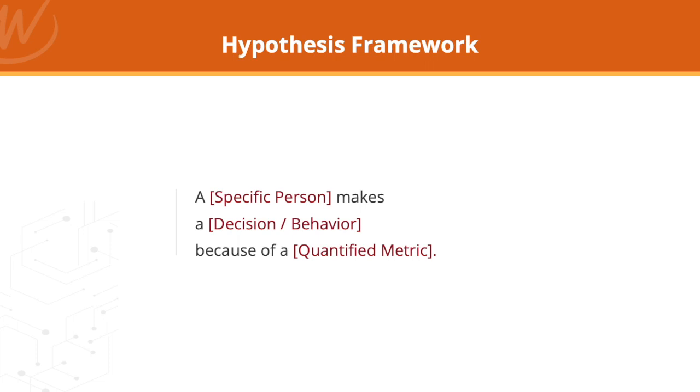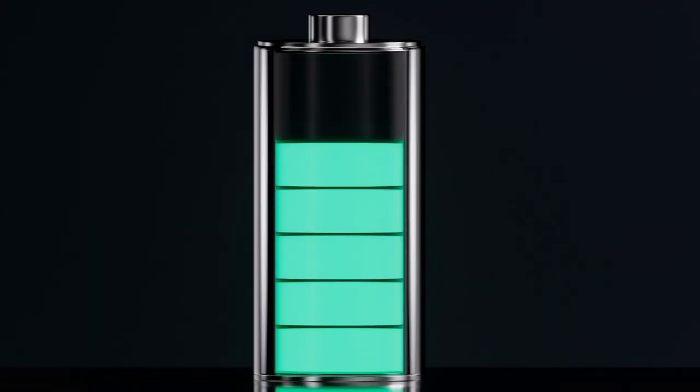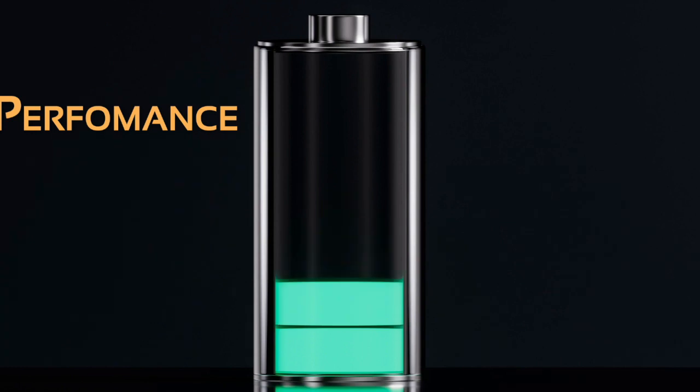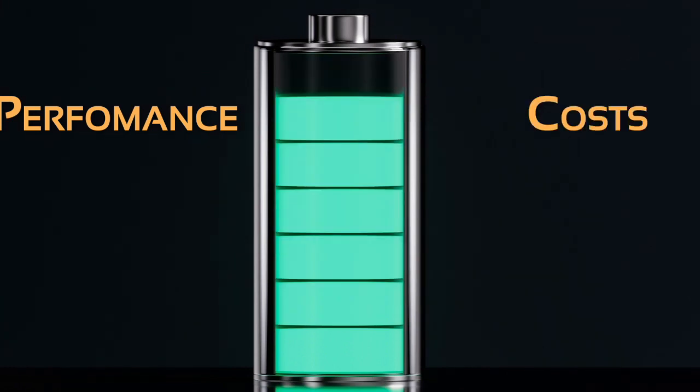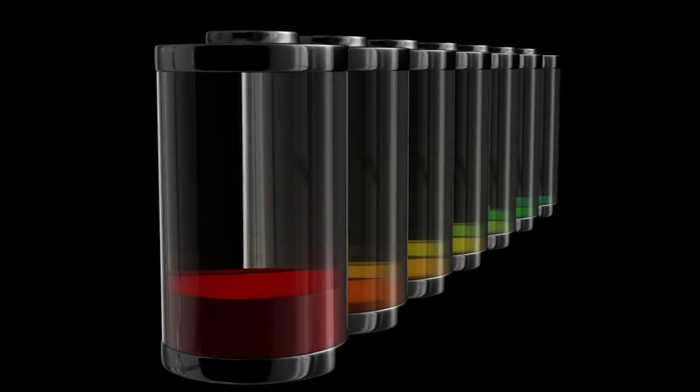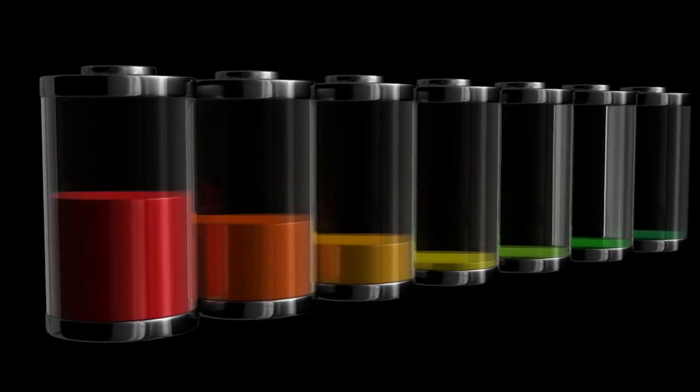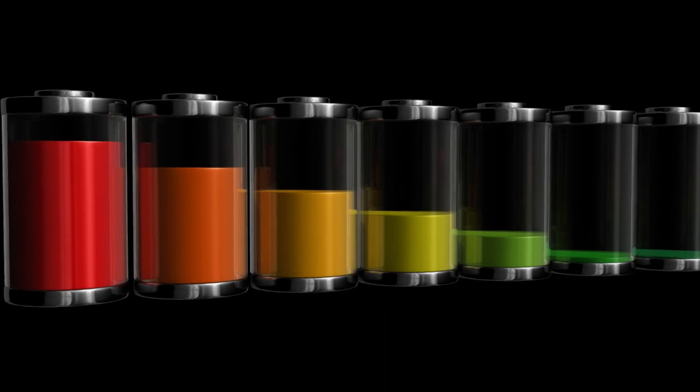Let's talk through a quick example. A generic hypothesis might be: battery manufacturers prioritize performance characteristics over costs. That's a decent initial hypothesis — it shows the relationship between performance characteristics and costs. But it could be further refined with more specific knowledge: what particular performance characteristics? How much? What cost?